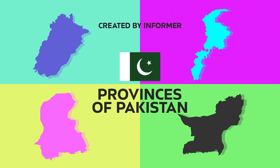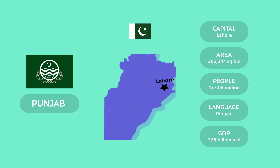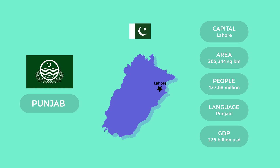Let's compare the provinces of Pakistan with each other. First, we have Punjab. There is also a Punjab province in Pakistan, just like India. Punjab's capital is Lahore, which is the second largest city in Pakistan. Punjab is the second largest province in Pakistan in terms of land area and the most populated province of Pakistan.